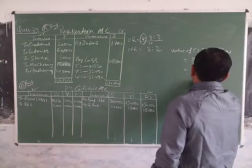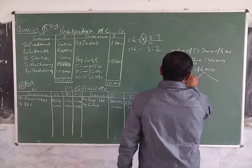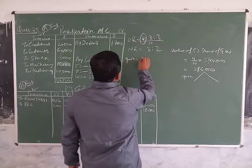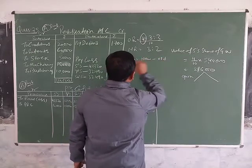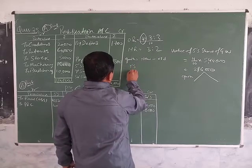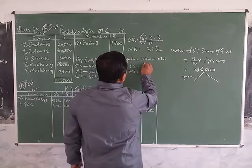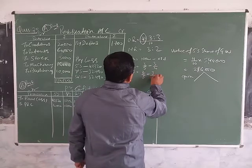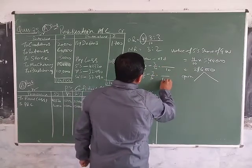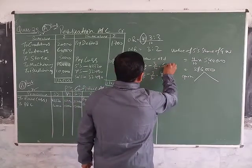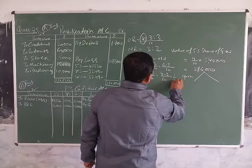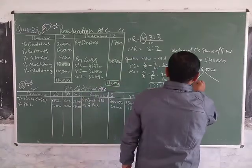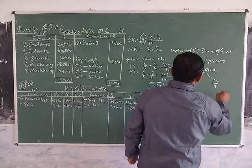This is distributed in the gaining ratio. The gain equals new minus old. The new ratio is 3/5 and 2/5, minus the old ratio 3/10 and 3/10. Converting: 6/10, 4/10 minus 3/10, 3/10 equals 3/10 and 1/10. The gaining ratio is 3:1, so this is distributed as 3/4 and 1/4.